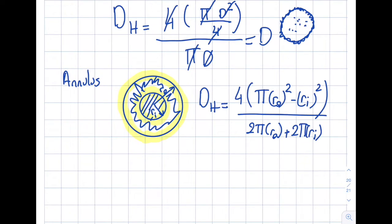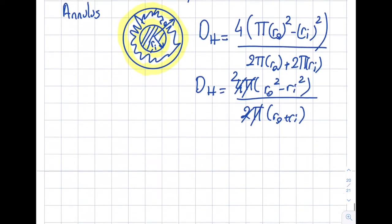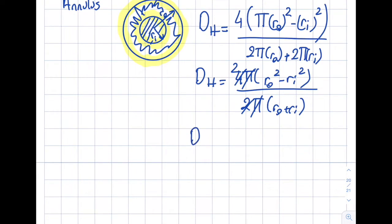So I can do some mathematics over here, so maybe simplify this. So I'm going to get myself 4π(r_o² - r_i²) divided by 2π(r_o + r_i). So you can see π's cancel and this becomes two. I can do something else over here as well. So if you take a look at it, what is r_o² - r_i²?